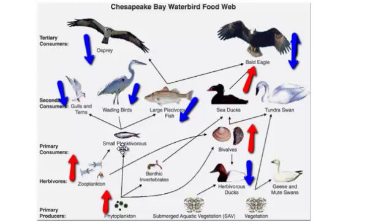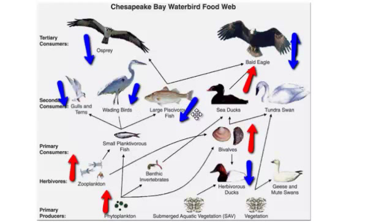If we were to remove the small planktivorous fish, one may predict that the piscivorous fish would decrease, as well as the wading birds, terns, and turns. With the large piscivorous fish disappearing, we would have an impact on the osprey, and perhaps one could predict the bald eagle would decrease.